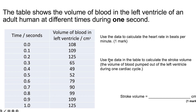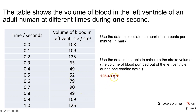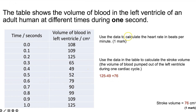The second part of the maths question: use the data to calculate the stroke volume — the volume of blood pumped out of the left ventricle during one cardiac cycle. To work this out, find the highest volume of blood in the left ventricle and subtract the lowest. The highest is 125 cm³ and the lowest is 49 cm³, so the stroke volume is 76 cm³.